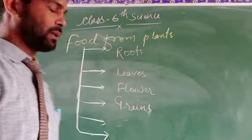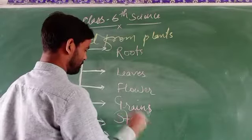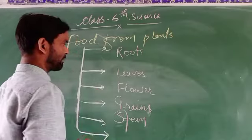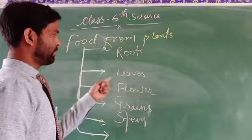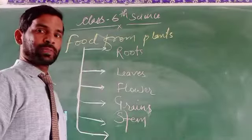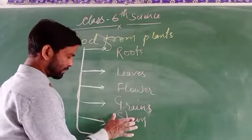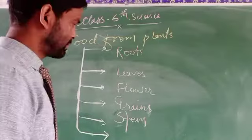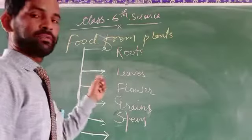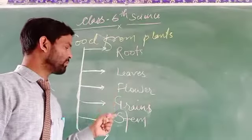The main food materials obtained through the plants are in the form of roots, leaves, stems, flower, fruit, etc. We will discuss about the roots first — what are the different parts of a plant: roots, leaves, stem, flower, fruit, etc.